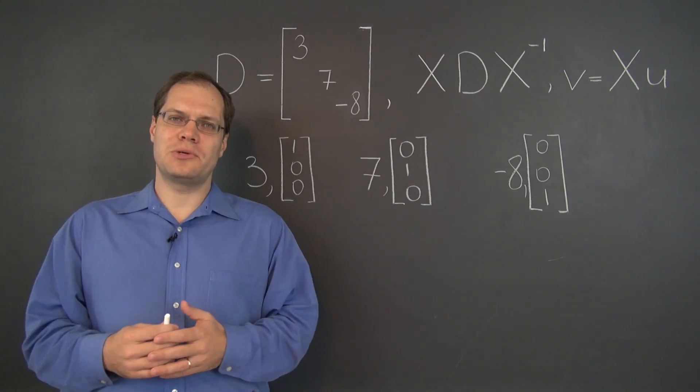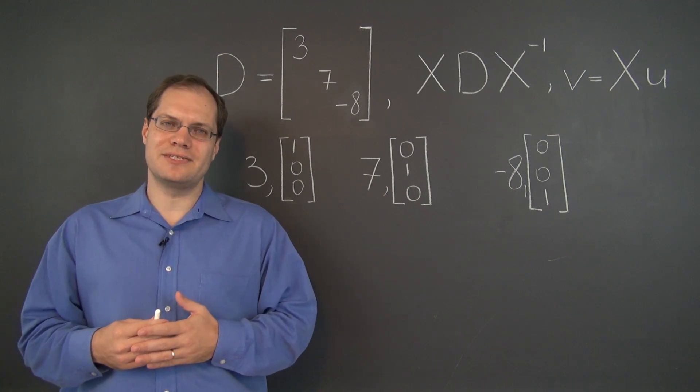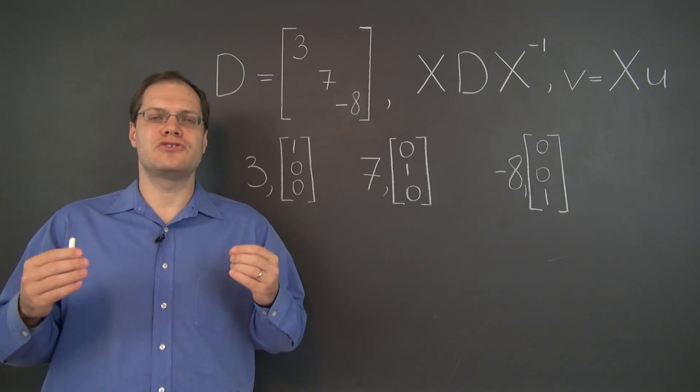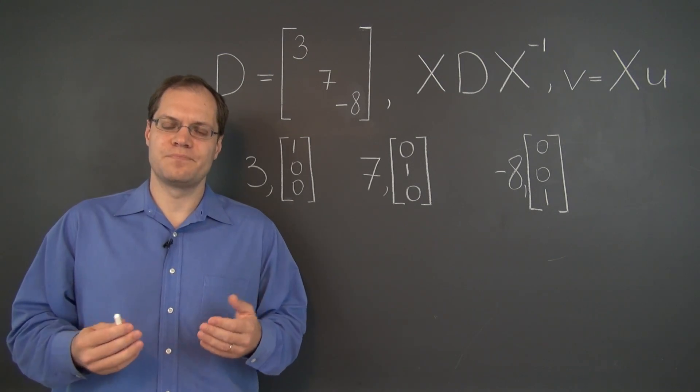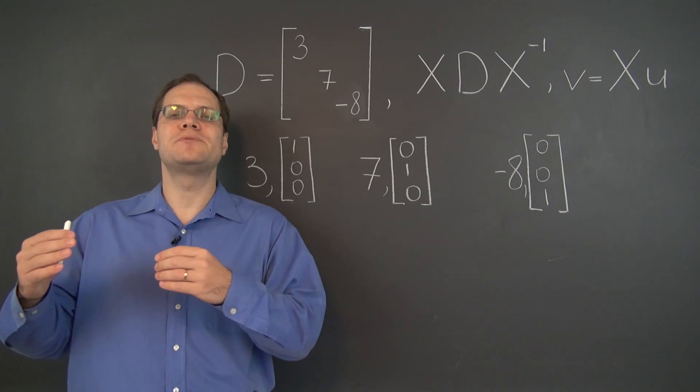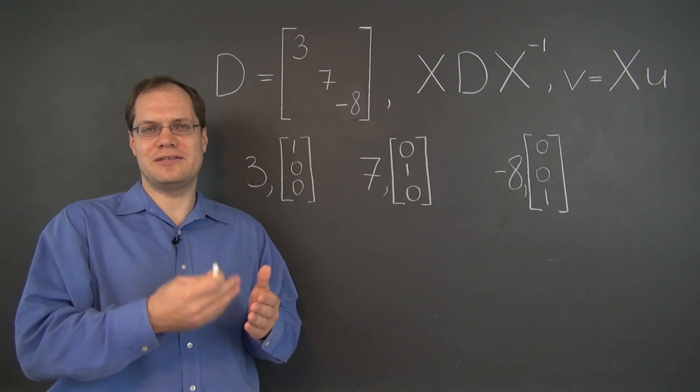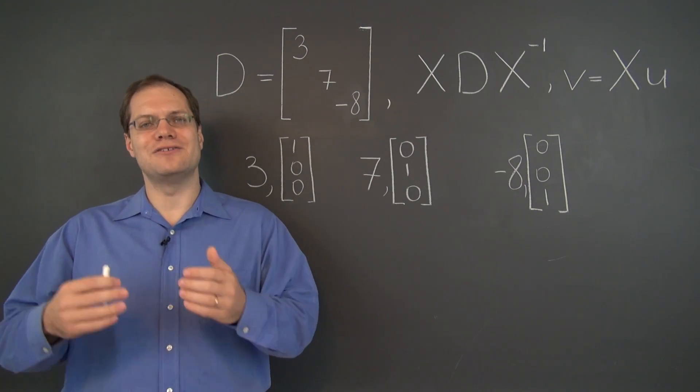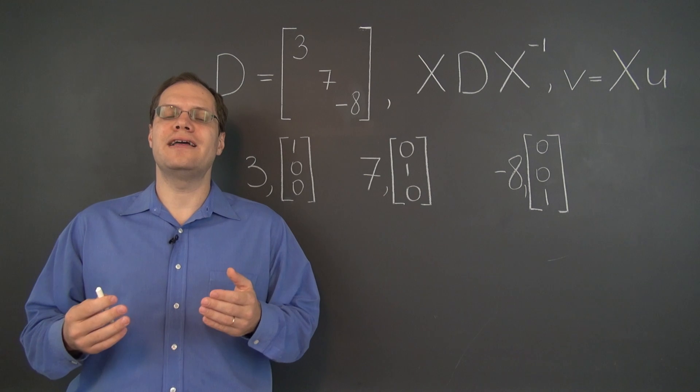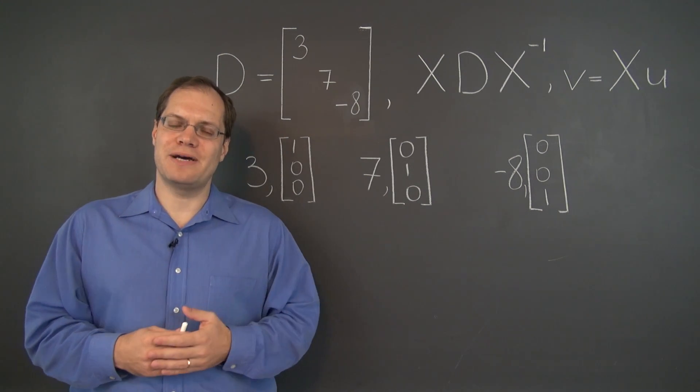In this video, we will put together what we've learned previously to answer the question that has already come up several times, and that is how do you construct a matrix with prescribed eigenvalues and eigenvectors? The eigenvalue algorithm helps us going the other way, given the matrix to find its eigenvalues and the corresponding eigenvectors. We want to go backwards, given the eigenvalues and eigenvectors, to find a matrix that has those eigenvalues and eigenvectors as its spectrum.